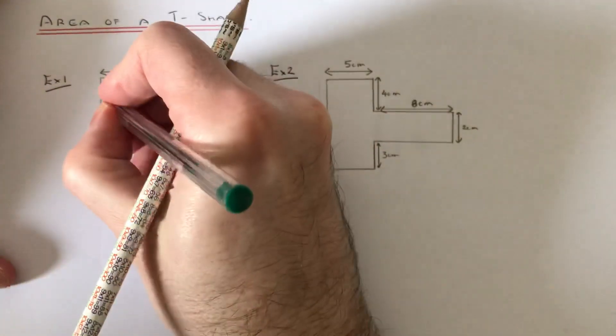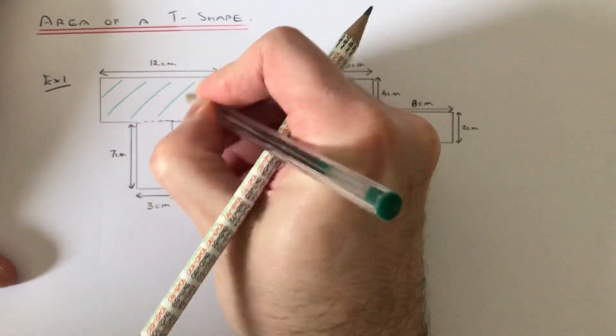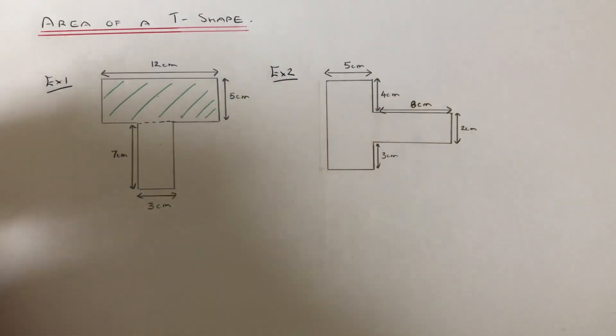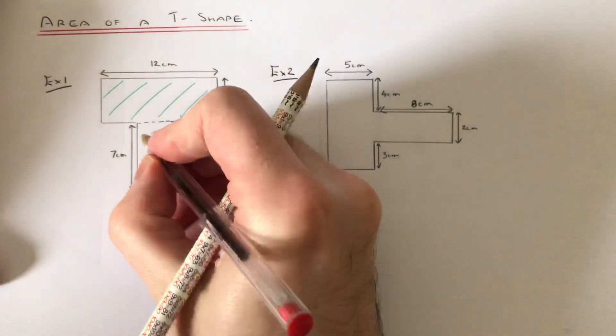So we need to find the area of the top rectangle here and the bottom rectangle underneath.